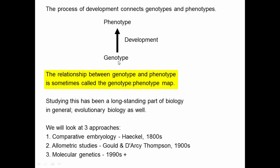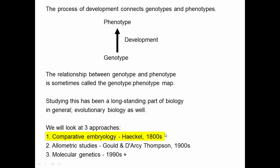This relationship between the genotype and the phenotype is sometimes called the genotype-phenotype map or mapping. Studying this has been a long-standing part of biology — one of the big questions being how organisms turn into adults — and it's also central to evolutionary biology. In the next three videos, we'll look at three different approaches to understanding this genotype-phenotype map: some comparative embryology from the 1800s, mathematical techniques used in allometric studies, and more recent work using molecular genetics and molecular tools to understand development and evolution.